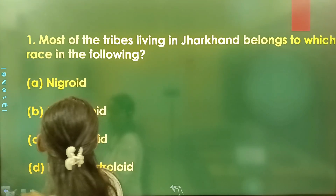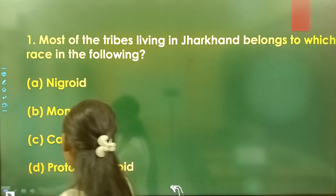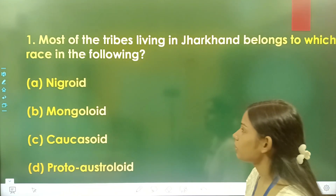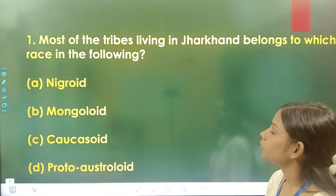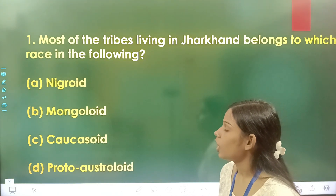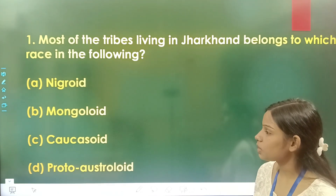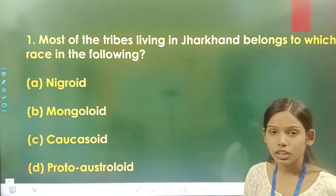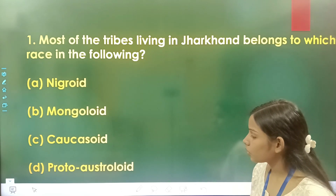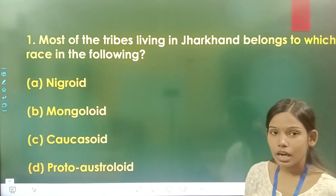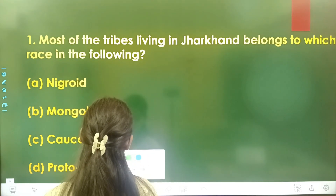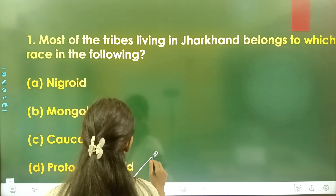Question number 1: Most of the tribes living in Jharkhand belong to which race? Option A is Negroid, option B is Mongoloid, option C is Caucasoid, and option D is Proto-Australoid. The correct answer is option D, Proto-Australoid.